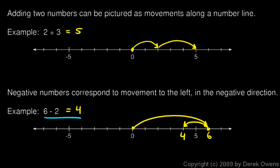You already know that six minus two equals four — you should be able to do that in your head in a snap. What you want to do now is understand that this equation corresponds to this picture: six to the right, minus two means we go two to the left, puts us at four. So six minus two is four.